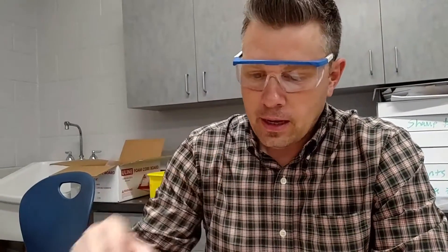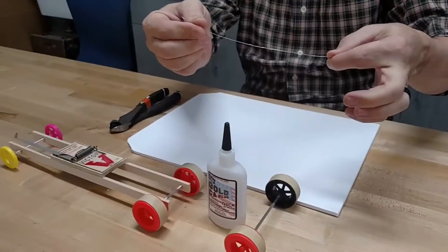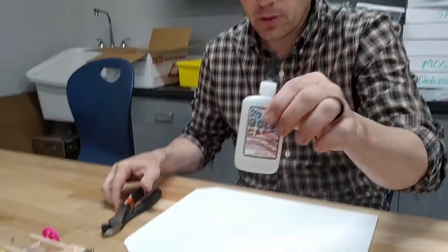We are going to go ahead and put the hook on the rear axle, and there's a couple things that you're going to need. You're going to need this piece of wire that came in your kit. You're also going to need some snips, and you're going to need a little bit of super glue.